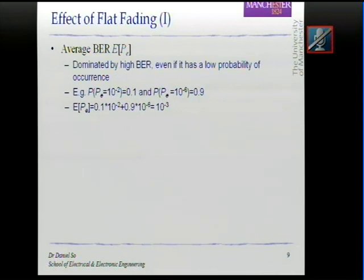The following is an example. If I have two scenarios: in one scenario, the probability of error is 10^-2, and the probability of that occurring is only 0.1. But on the other hand, the other situation is that the probability of error is 10^-6, which is very good, very low, and the chance of that occurring is 0.9. So intuitively, we would have thought that this system is quite good because for most of the time the bit error rate is very low. For 90% of the time, the bit error rate is 10^-6. Only 10% of the time the bit error rate is 10^-2, so we would think the performance is good.